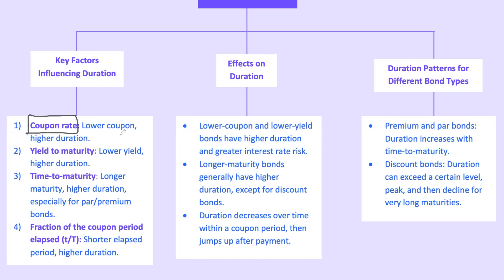Coupon rate: the lower the coupon rate, the higher the bond's duration. With a lower coupon rate, more weight is placed on that final maturity payment — it's like having a meal where the main course is way bigger than the appetizers; you're waiting longer for the big payoff. Yield to maturity: similarly, a lower yield to maturity increases duration. When YTM is low, the present value of future cash flows is higher, which stretches out the average time to get your money back. With a lower YTM, each dollar in the future counts more, making the bond more sensitive to rate changes.